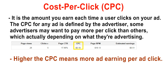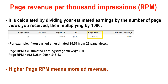Let's move to the next one — page RPM. It stands for page revenue per thousand impressions. It is calculated by dividing your estimated earnings by the number of page views you received, then multiplying by 1000. In this example, page views is 28 and page RPM is 18.13.